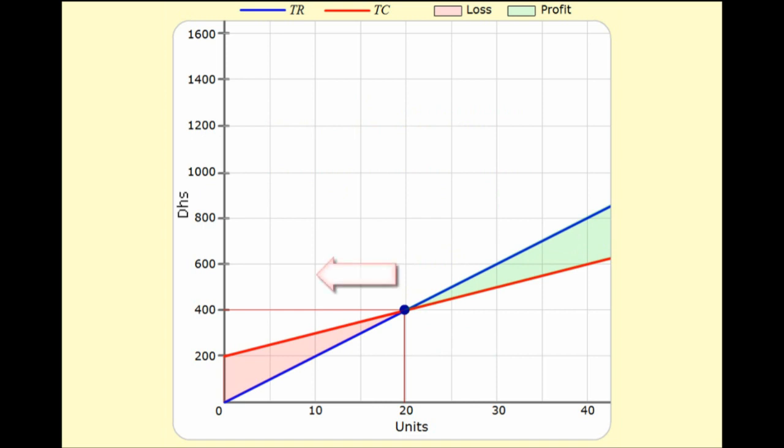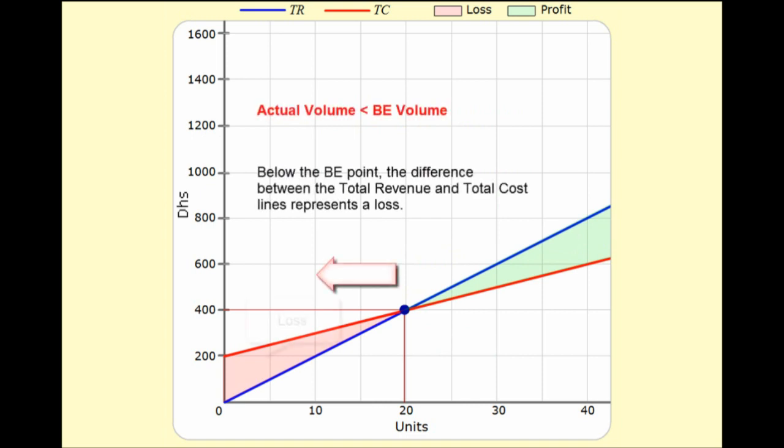Now, we're looking to the left of the break-even point, area shaded in red. Here, we didn't generate enough revenue to take care of our costs. If your actual volume is less than the break-even volume, then it means that you're not selling enough to cover your expenses, so you have a loss.